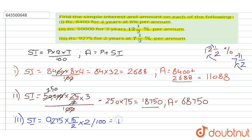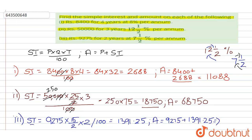On solving, the simple interest is one thousand three hundred ninety-one point twenty-five. The amount is 9275 plus 1391.25, which equals ten thousand six hundred sixty-six point twenty-five. Hence, these are the answers for simple interest and amount for all three parts.